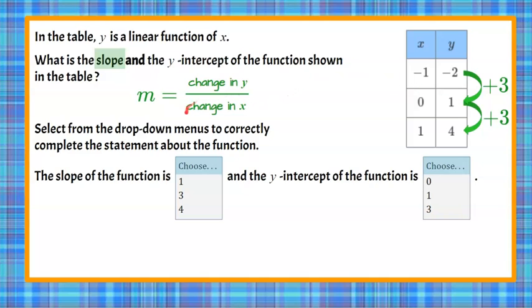Now let's look at the change in x. We're going to go from negative 1 to 0 and 0 to 1. Negative 1 to 0 is increasing by 1. 0 to 1 also increases by 1. So my change in y is 3 over my change in x, which is 1. 3 divided by 1 is 3, so the slope of this linear function is 3. And we can choose that the slope of our function from our drop-down menu will be 3.